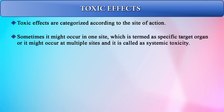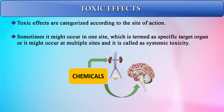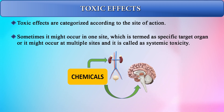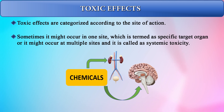Toxic effects are categorized according to site of action. They can occur at a single site — a specific target organ — or at multiple sites, which is called systemic toxicity. For example, one toxic chemical can affect both the excretory system — kidneys, urinary bladder, urethra — and the brain, including the cerebellum and cerebrum. Mercury and lead, for instance, are both nephrotoxic and neurotoxic in nature.